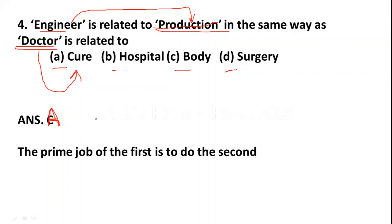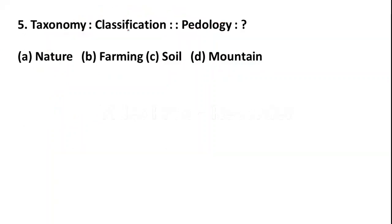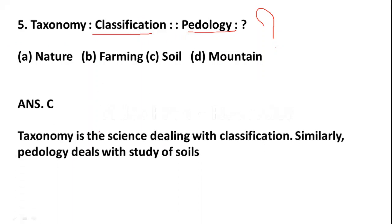Question 5: Taxonomy is to Classification as Pedology is to — Option A: Nature, Option B: Farming, Option C: Soil, Option D: Mountain. Taxonomy is the science dealing with classification. Similarly, pedology deals with the study of soil. So Option C, Soil, is the right answer.